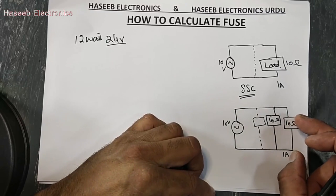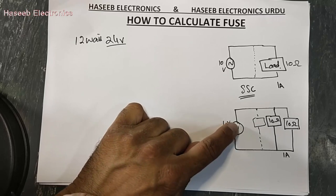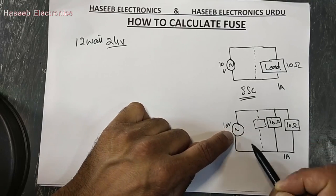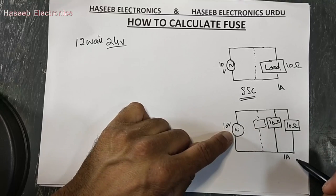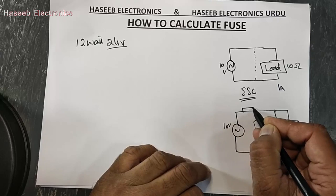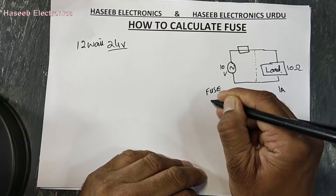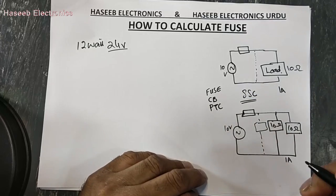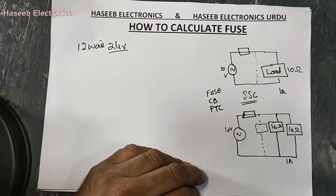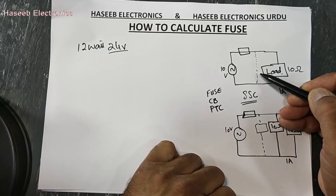The load reflects back to the drive section — our source. If this source can provide only 1 amp but more is demanded, it will be overloaded, and the wiring and connections may be damaged. To protect all these systems we need a protection device: it may be a fuse, a circuit breaker, a PTC, or a resettable fuse. We can select any one of these protections to protect the system.